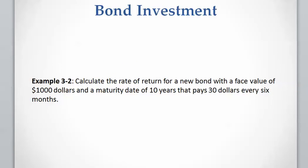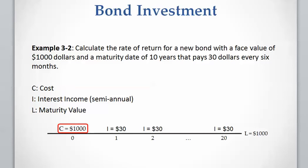Let's work on this example. Let's assume you are going to buy a bond that has the face value of $1,000 with a maturity date of 10 years that pays you $30 every six months, and you want to calculate the return on this investment. First we draw the timeline. We are going to have 20 time intervals because there are 10 years and each six months we are going to receive $30.